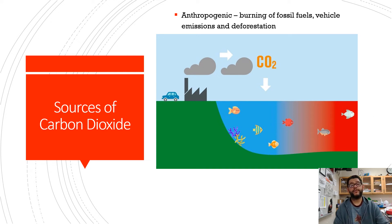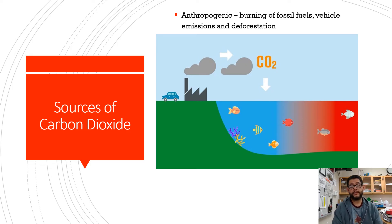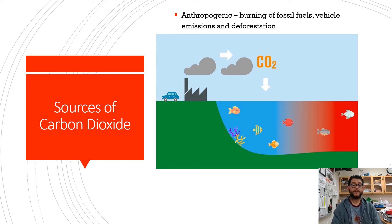You get a bunch of sources of anthropogenic carbon dioxide — obviously the ones we've mentioned before: burning of fossil fuels, vehicle emissions, but you can also mention deforestation. The fact that there are fewer places on land like trees for CO2 to be stored is going to be a significant source of carbon dioxide, because that's less places for it to be absorbed and put away. So it ends up in the ocean and other sources like that.